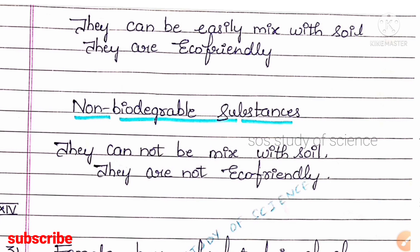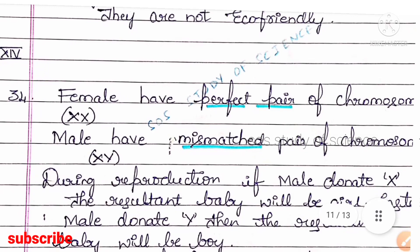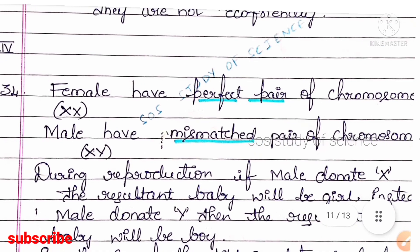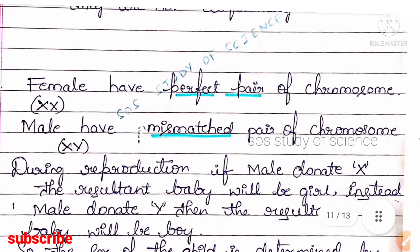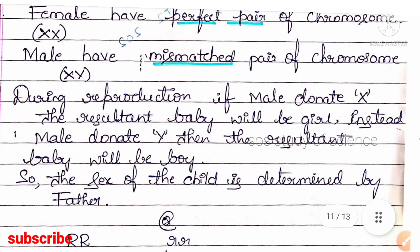Question 34 (three marks): in humans, the sex of the child is determined by the father. Females have a perfect pair of chromosomes — XX — and males have the mismatched pair — XY. During reproduction, if the male donates X, the resultant baby will be a girl; if the male donates Y, the resultant baby will be a boy. Therefore, the sex of the child is determined by the father.